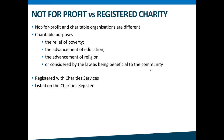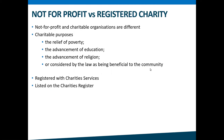Often people talk about not-for-profits like they're the same as registered charities. While they have similarities, they're different. To be a registered charity in New Zealand, your organization has to have purposes that fall into one of four categories: the relief of poverty, the advancement of education, the advancement of religion, or other purposes beneficial to the community. Registered charities must provide a benefit to the public and ensure there is no private benefit or profit to anyone involved. Registered charities are those that have been through an application process and are listed on the charities register.